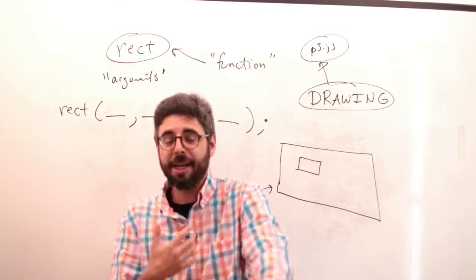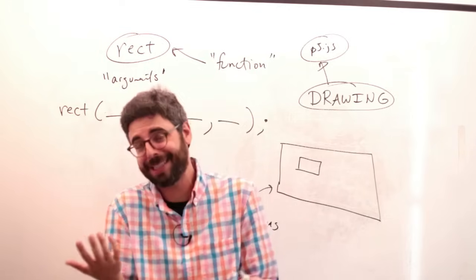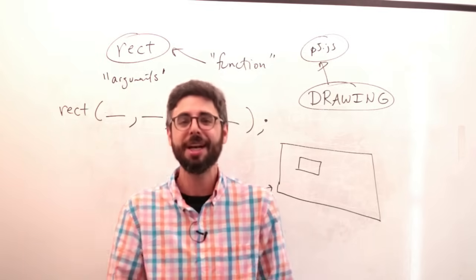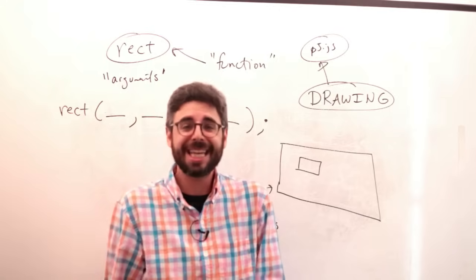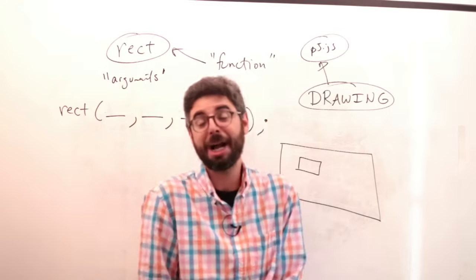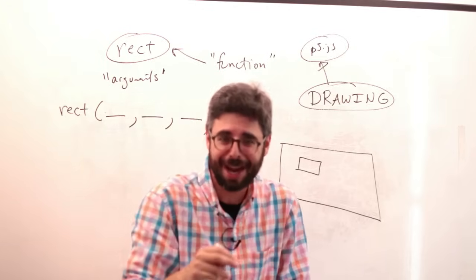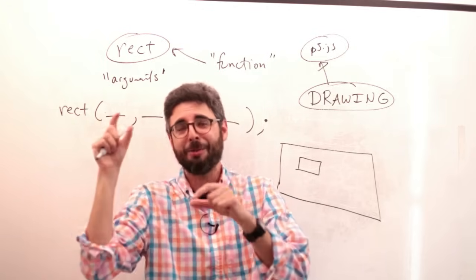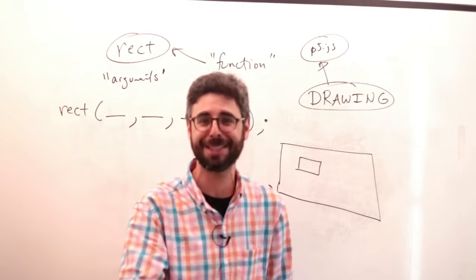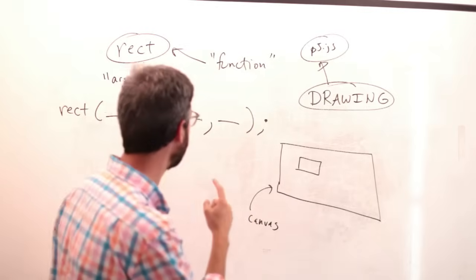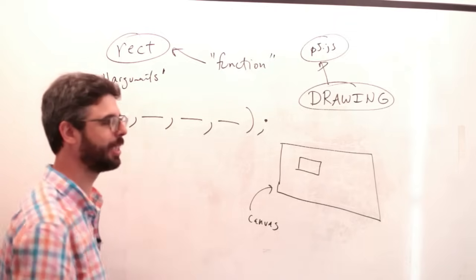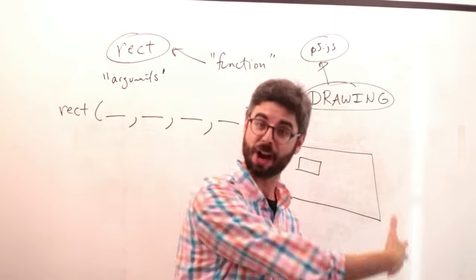So this is a moment that we have to just admit something to ourselves, which is that syntax is a thing you have to deal with with programming. So with the human language that we speak to each other, in my case it's English and some broken bad versions of some other languages, but we can say things very informally. You know, draw a rectangle. Would you please draw a rectangle kindly? There's all sorts of different ways we could say that. But here, I have to say it a very specific way. If I'm missing a comma, if I'm missing a parentheses, it's not going to work. We'll get an error message.